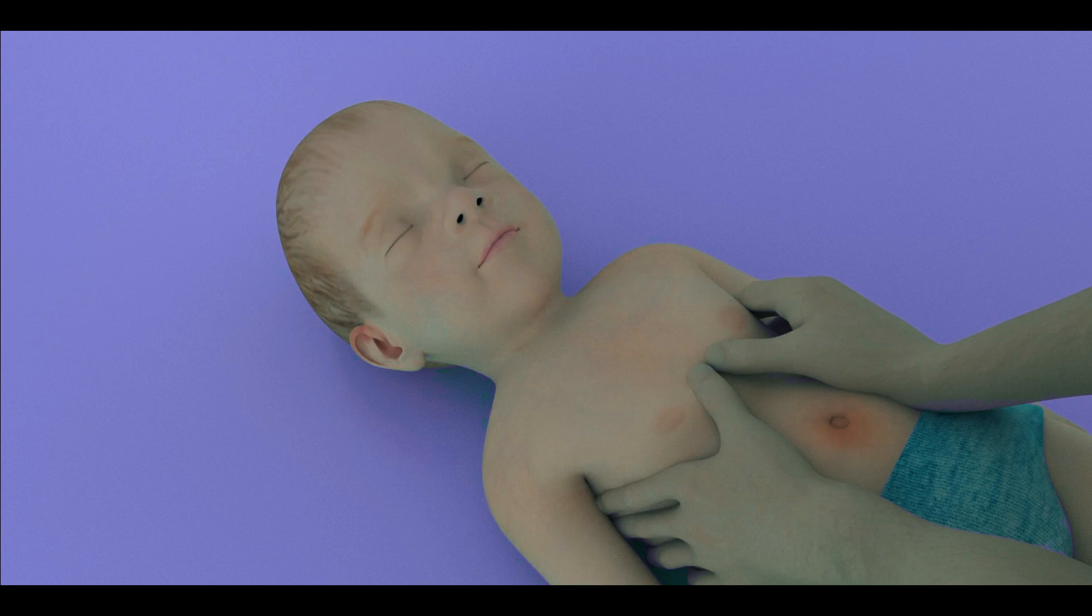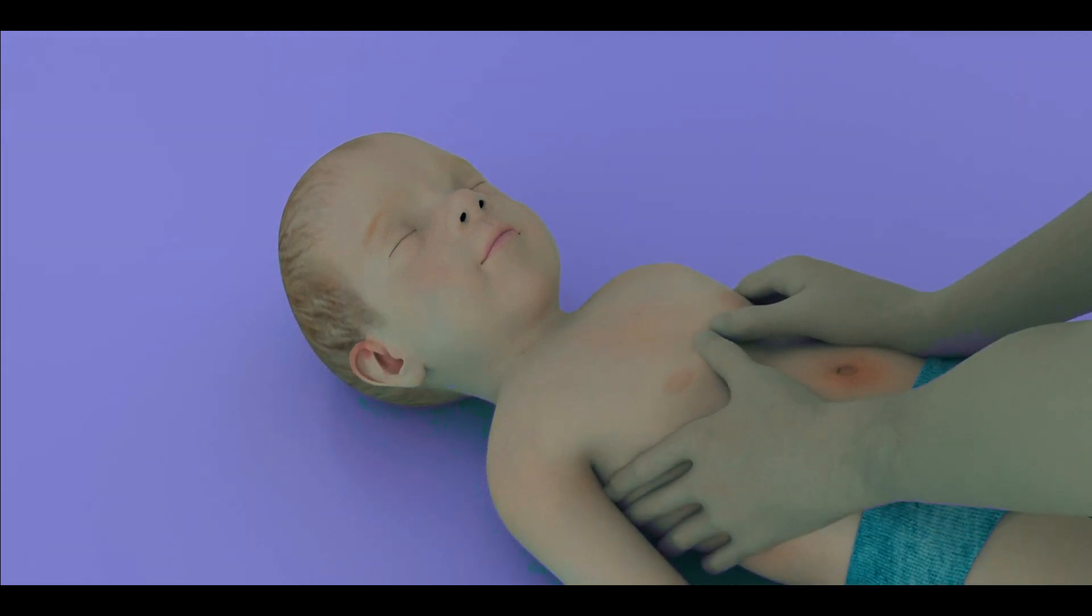For a baby, put both thumbs side-by-side at the center of the baby's chest, just below the nipple line. Use both thumbs simultaneously to push down firmly and quickly.